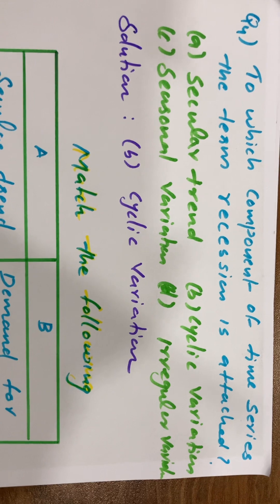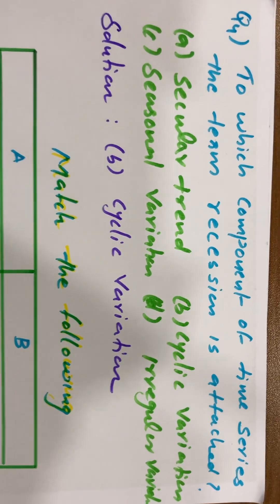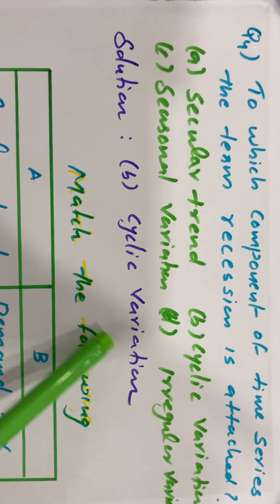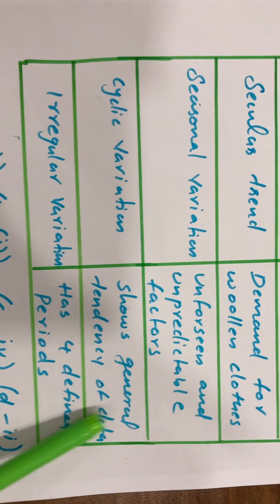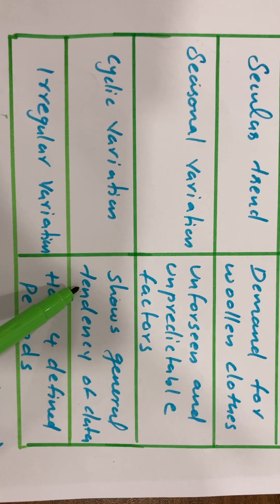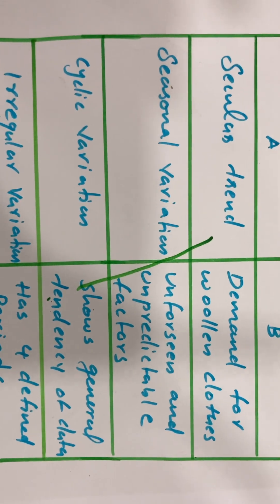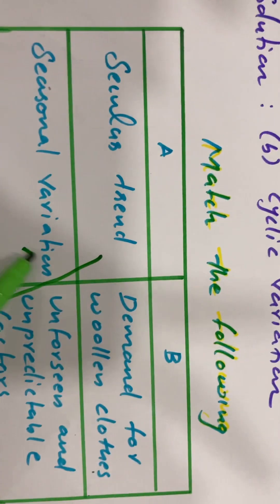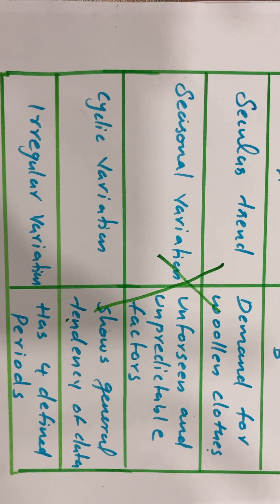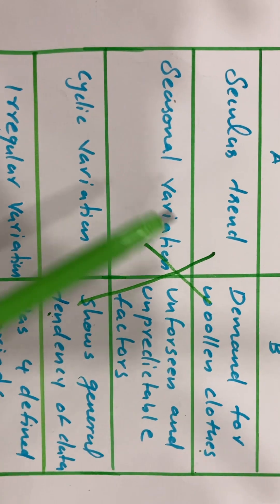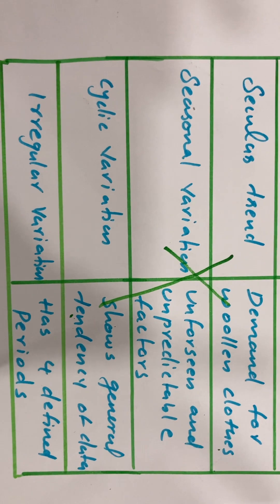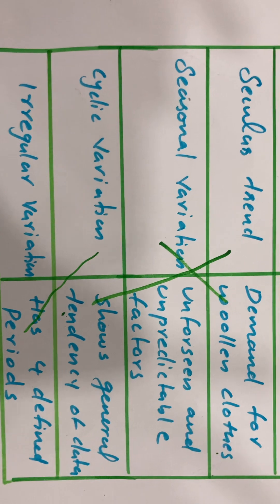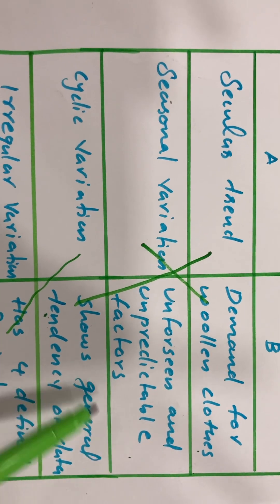To which component of time series is the term recession attached? Recession is related to cyclical variation. Secular trend shows the general tendency of data. The seasonal variation example is the demand for wool and clothes. Cyclical variation is defined as oscillatory movements over periods greater than one year. Irregular variation involves unforeseen and unpredictable factors.